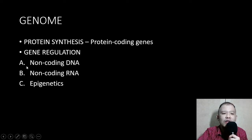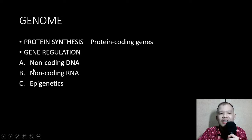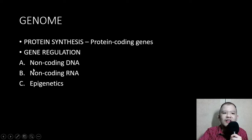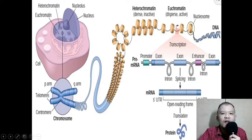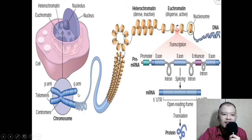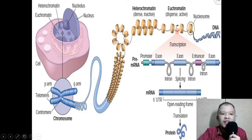Those are non-coding DNA, non-coding RNA, and epigenetics. Let's look back at the previous diagram. Which parts are the non-coding? The centromere is a non-coding DNA — the centromere is the part that holds the two chromatid strands together.